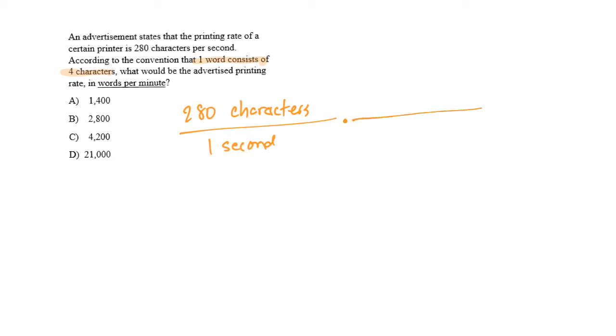So when I multiply this, I'm going to put characters down here in the bottom. How many characters are there per one word? Well, there are four characters for every one word.